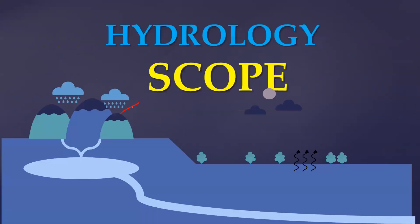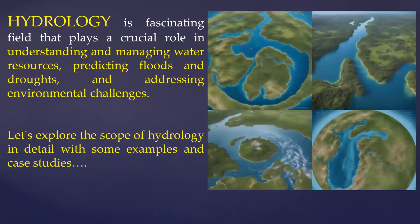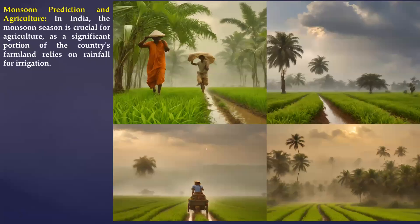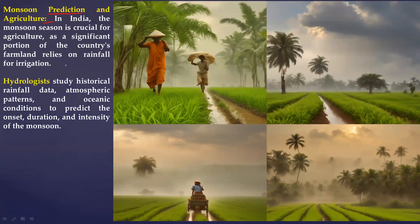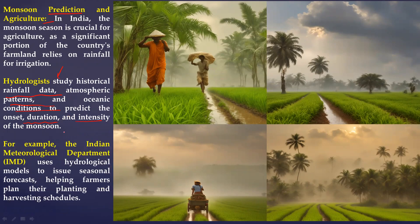Looking at the scope of hydrology: hydrology plays a crucial role in water management, predicting floods, droughts, and addressing environmental challenges. The first scope is monsoon prediction and agriculture in India specifically, because monsoons are erratic every year, affecting planning, policy, and food security. Hydrologists study historic rainfall data, atmospheric patterns, and oceanic conditions to predict the onset, duration, and intensity of monsoon each year. IMD — the Indian Meteorological Department — uses these hydrological models to help farmers.